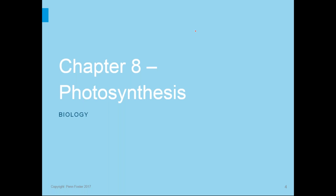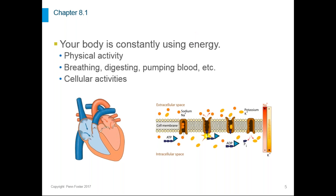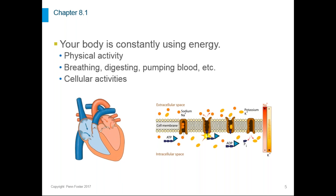So I'm going to get going on this presentation about chapter eight. In this chapter, we talk about energy and how chemical energy works, and then how we get it from photosynthesis. It starts out by talking about how your body is constantly using energy — not just during physical activity, but also sitting in a chair or sleeping. Your body is always going through processes like breathing, digesting, and pumping blood, and on a cellular level, energy is used for most of the processes carried out by organelles.